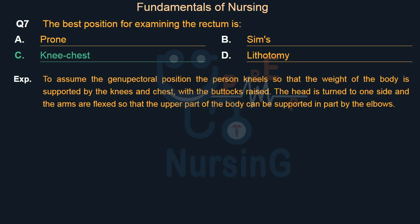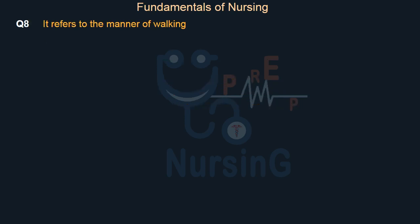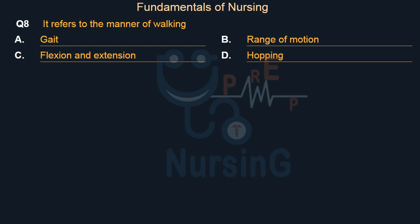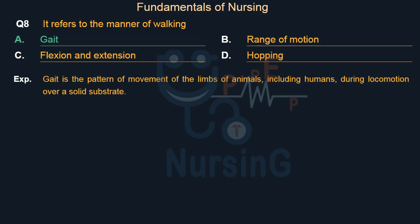It refers to the manner of walking: Option A — Gait. Option B — Range of motion. Option C — Flexion and extension. Option D — Hopping. Right answer is Option A: Gait. Gait is the pattern of movement of the limbs of animals, including humans, during locomotion over a solid substrate.